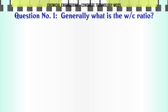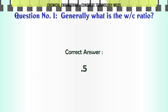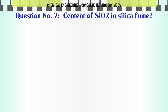Generally, what is the W/C Ratio? A. 0.25. B. 0.5. C. 0.75. D. 1. The correct answer is 0.5.